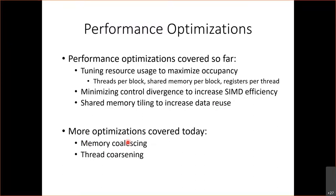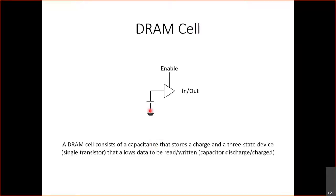Before talking about memory coalescing, let's review DRAM architecture. A DRAM cell can be thought of as a capacitor that stores charge and a three-state device: when you enable it, the capacitor discharges so you can read the value. If the value is one, it discharges and you detect that discharge; if zero, it doesn't discharge and you detect no discharge. So a DRAM cell consists of capacitance that stores charge and a three-state device that allows data to be read and written.